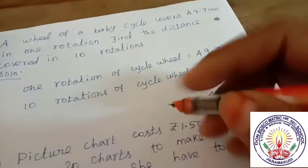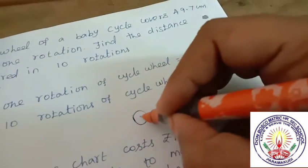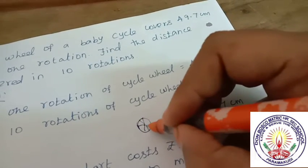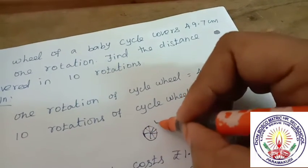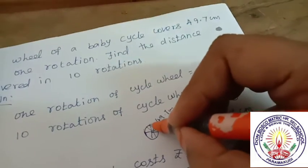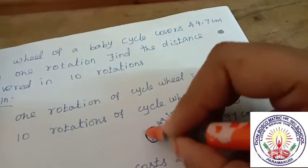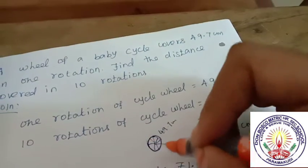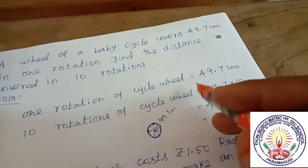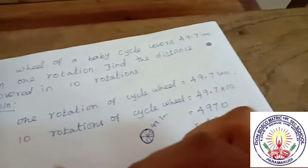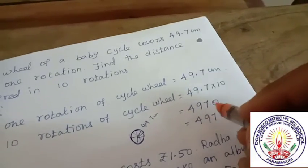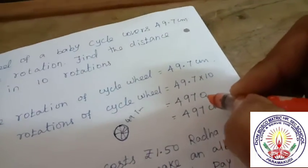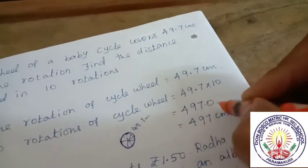If you have a cycle of wheels, you can rotate it. One rotation of the cycle wheels equals 49.7 centimeters. 10 times rotate it, this is 10 times multiple. 4, 9, 7, 0. After putting the point, 1 digit last point. 497 centimeters.